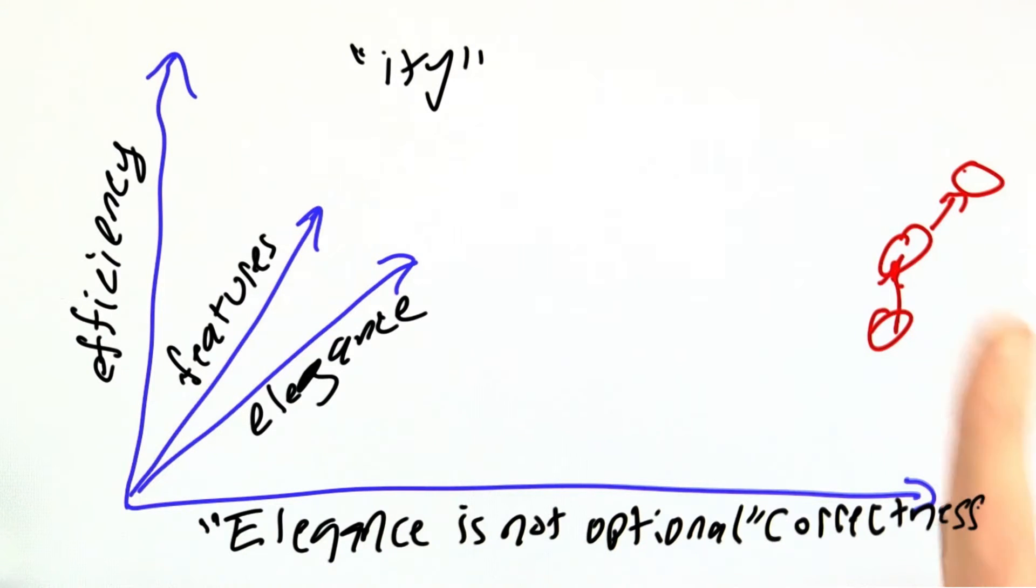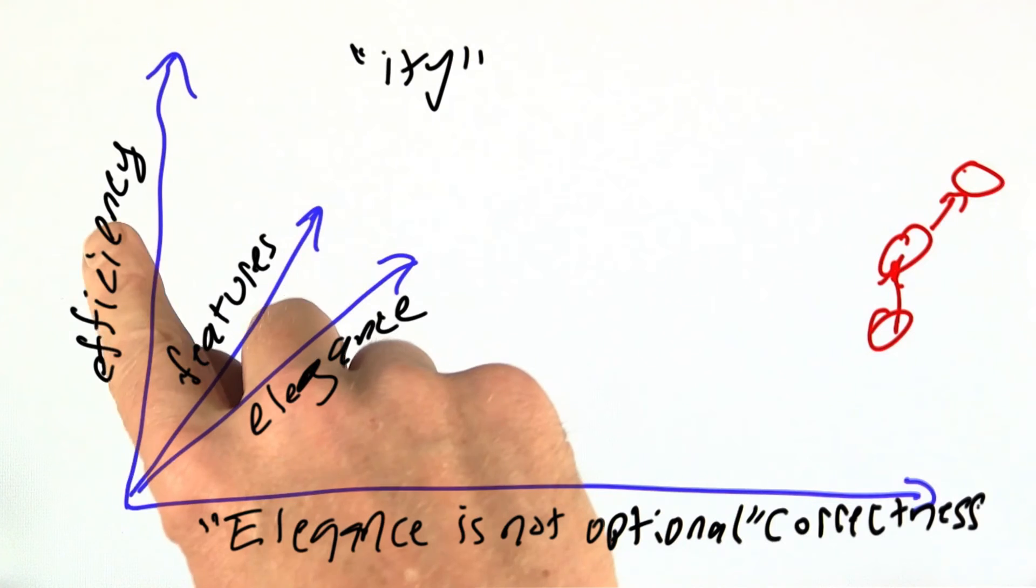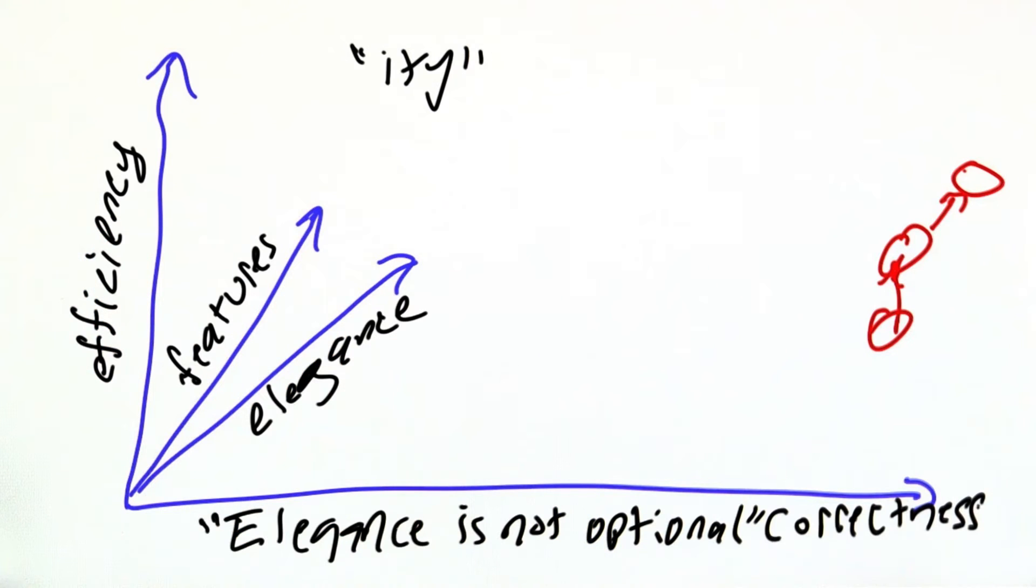Sometimes we think about moving the program to a new point in the space of elegance—moving along the elegance dimension without increasing the correctness, features, or efficiency. In some sense, you might think that's not really doing anything.